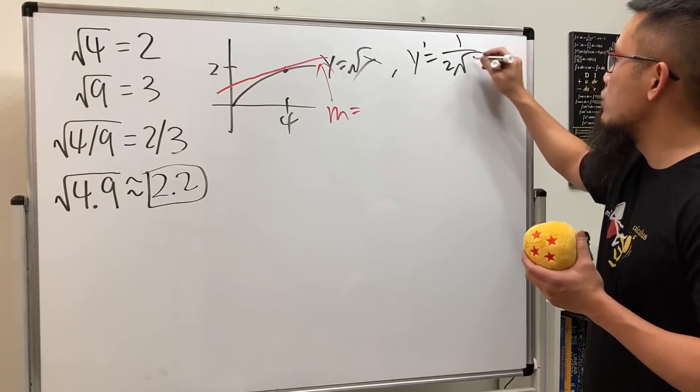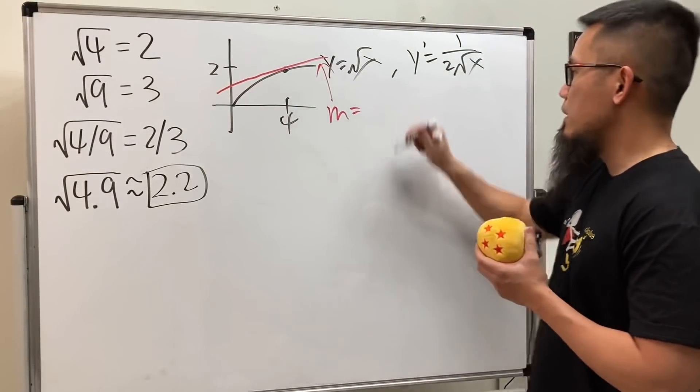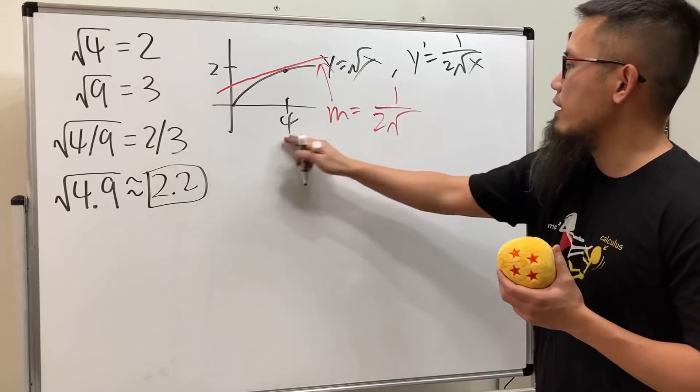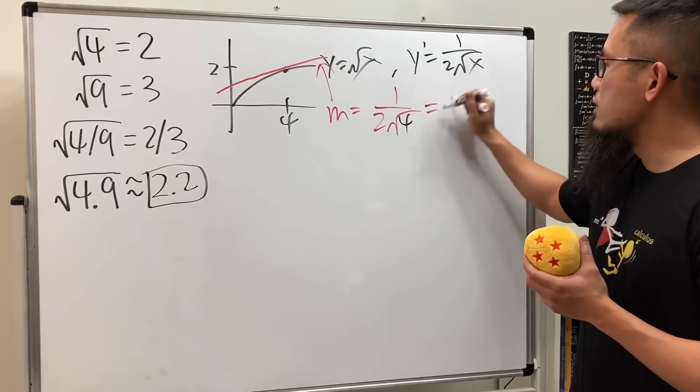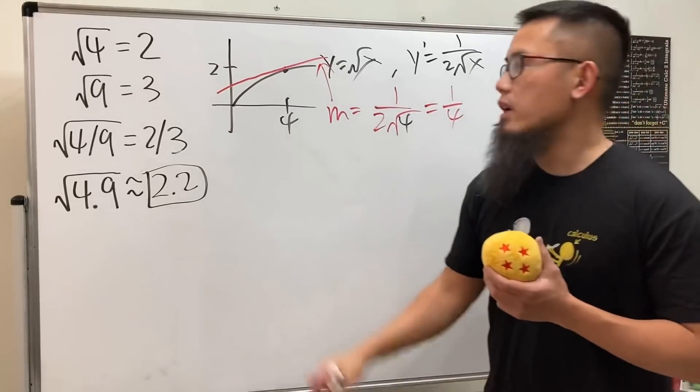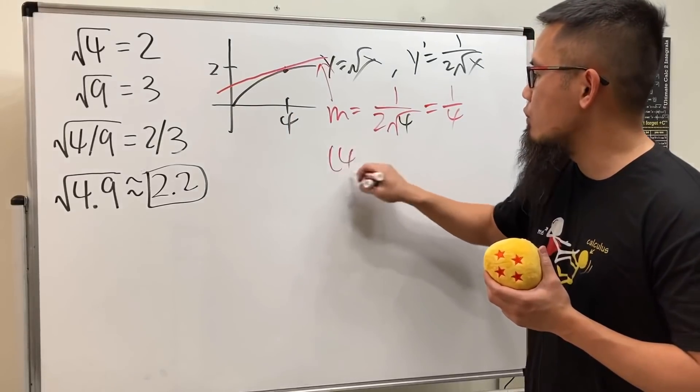The derivative is 1/(2√x), and the slope is just going to be 1/(2√4) when x is 4. Just plug in, so the slope of the tangent line is 1/4. And we know the point is (4, 2).